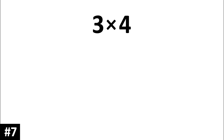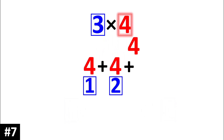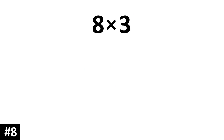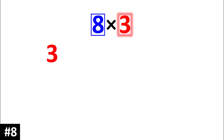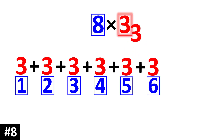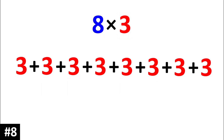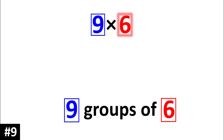Three times four is the same thing as three groups of four. Eight times three is the same thing as eight groups of three. Nine times six is the same thing as nine groups of six.